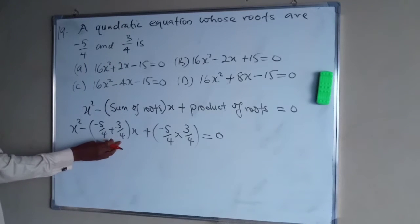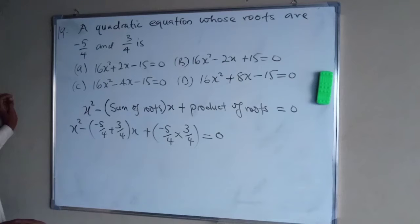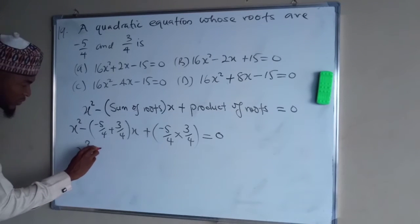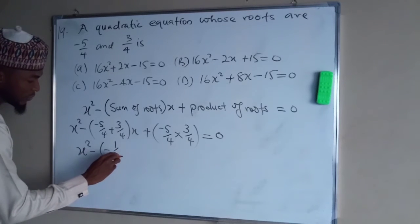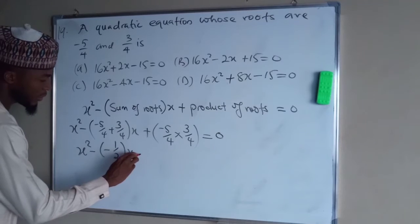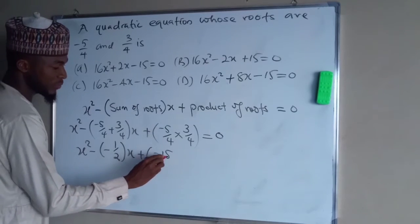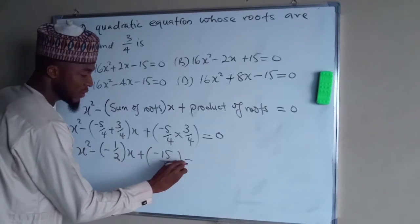This one, they have a common denominator, so we can join the numerators together. Minus 5 plus 3 is negative 2 over 4, which is 1 over 2. So x squared minus 1 over 2 multiplied by x plus... this time this is negative 15, and this time this is 16. All this equal to 0.